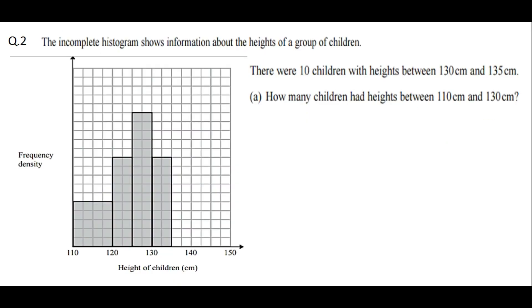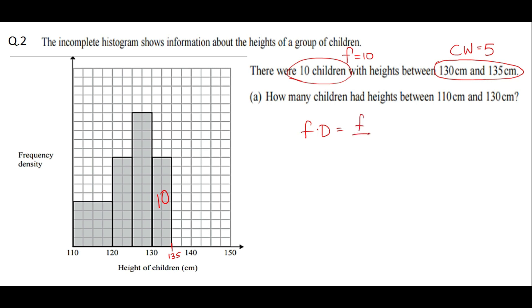Question 2. The incomplete histogram shows information about the heights of a group of children. There were 10 children with heights between 130 cm and 135 cm. How many children had heights between 110 cm and 130 cm? The frequency is 10 and the class width is 135 minus 130, which is 5. So the frequency density is 10 divided by 5, giving 2.